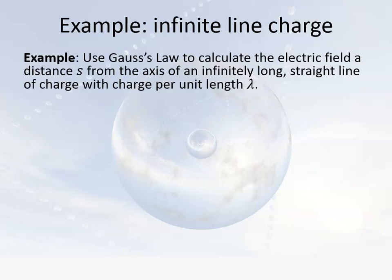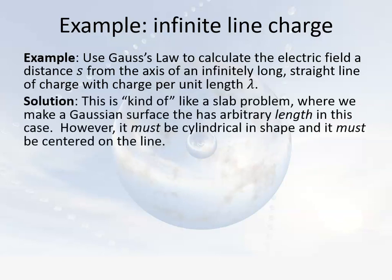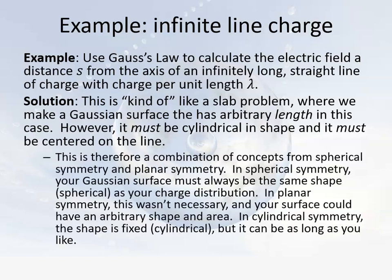Let's first tackle, as we've done before with our previous discussions, a trivial example — something that we already know about. Let's use Gauss's Law to calculate the electric field at a distance s from the axis of an infinitely long straight line of charge with charge per unit length lambda. In some ways this is kind of like a slab problem where our Gaussian surface will have an arbitrary length, but it must be cylindrical in shape, centered on the line, to exploit the symmetry properties of Gauss's Law. It's a combination of concepts from spherical and planar symmetry, which is why I kept these examples for last.